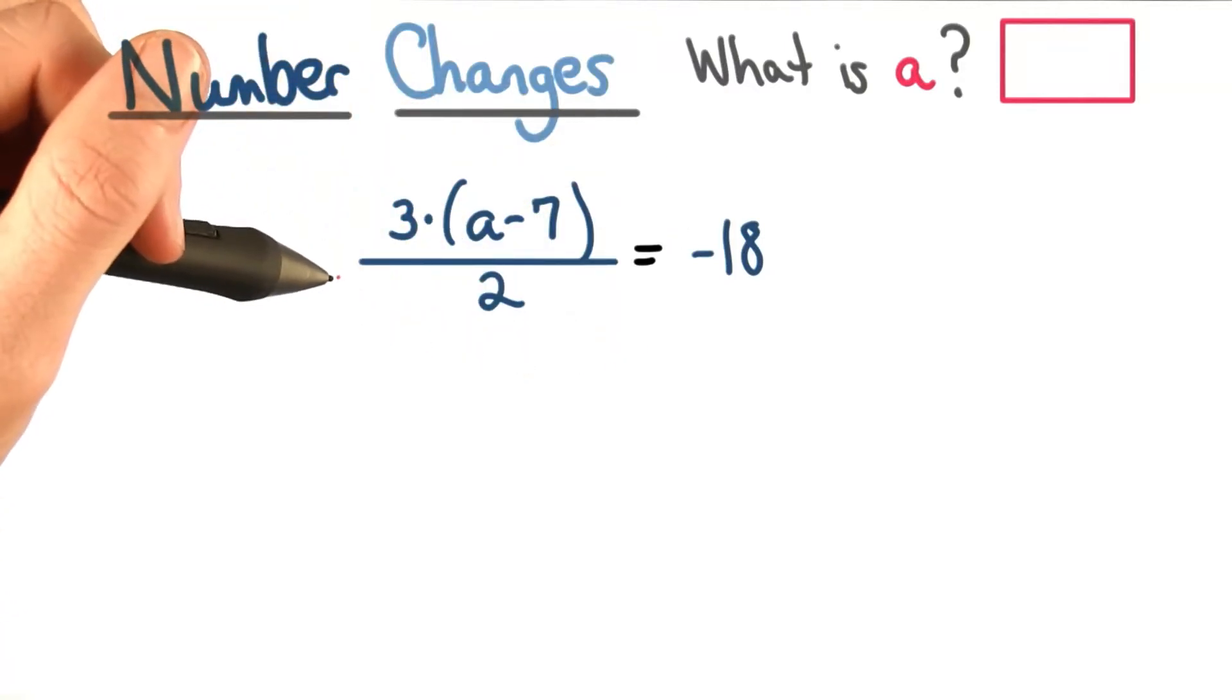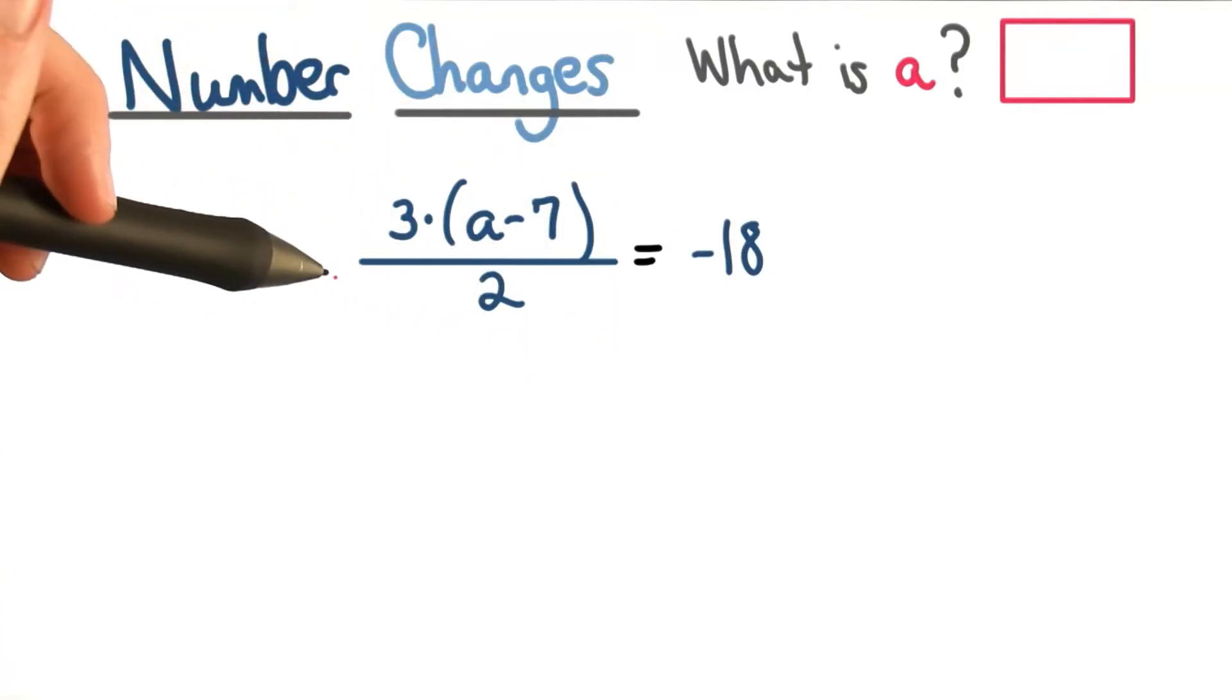To solve this equation, we want to undo the division by 2. We want to clear the fraction, so we multiply by 2.